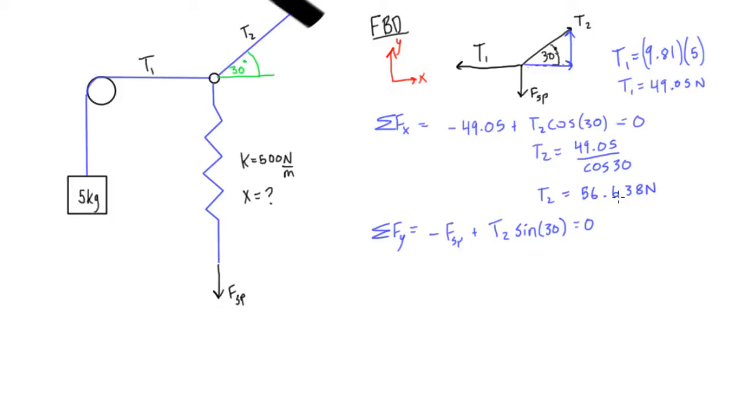So we know T2 is equal to 56.638 newtons so we can have 56.638 times sine 30 will be equal to, we'll just bring the force spring over here so we have fsp, and if you multiply 56.638 times sine 30 we're going to get 28.319 newtons and again T2 remember this is pointing in this direction and force spring is pulling down in this direction.